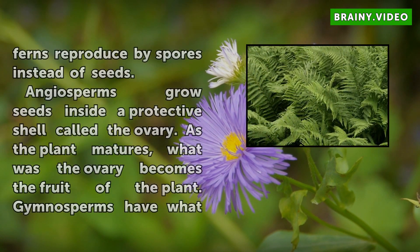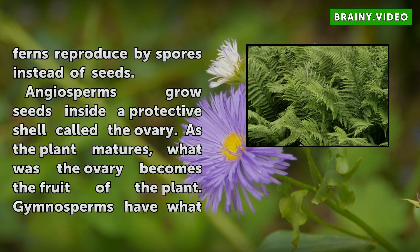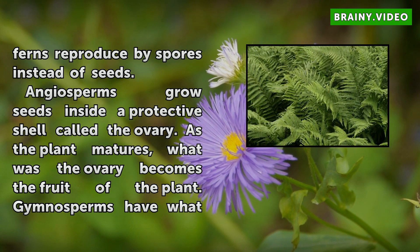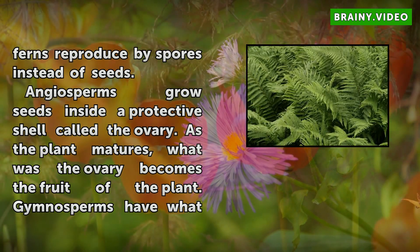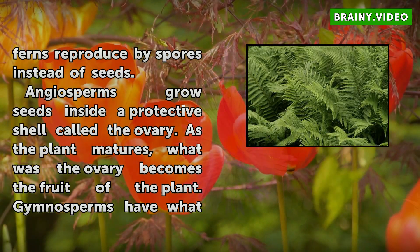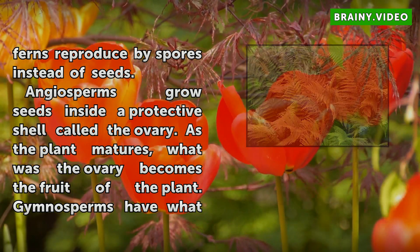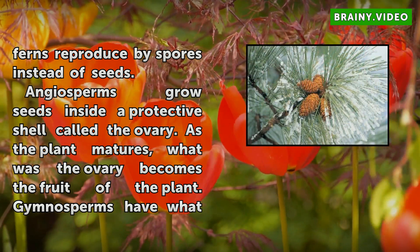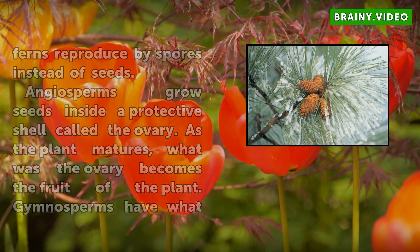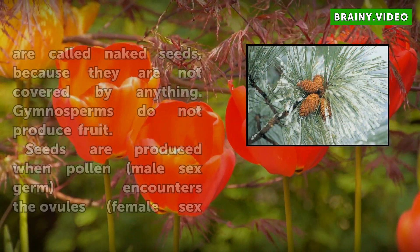Angiosperms grow seeds inside a protective shell called the ovary. As the plant matures, what was the ovary becomes the fruit of the plant. Gymnosperms have what are called naked seeds, because they are not covered by anything. Gymnosperms do not produce fruit.